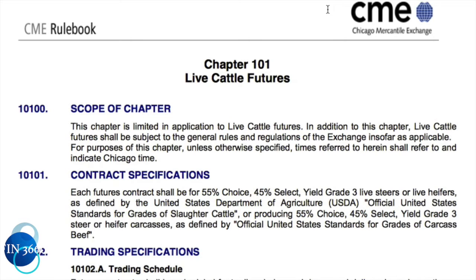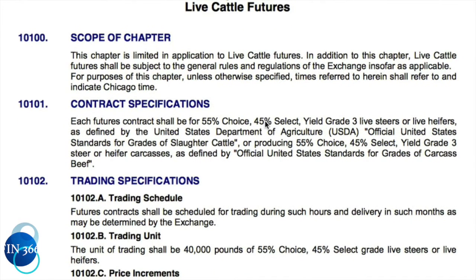In the last video I said we would look at a contract before we talked about convergence. The contract I've chosen is live cattle futures, and this is from the Chicago Mercantile Exchange rulebook. This whole chapter — Chapter 101 — is from the rulebook, so let's see what we have here.